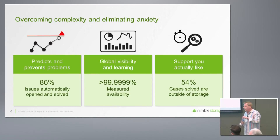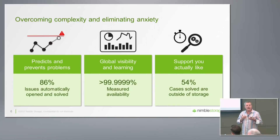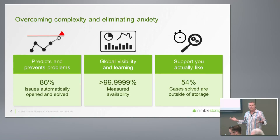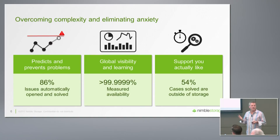Let me walk through the value we give back to our customers. We have the ability to predict and prevent — we actually open and resolve with prescriptive recommendations 86% of issues in the support organization. We have global visibility across the entire install base and are able to learn from one customer and apply that learning to all customers. Our fundamental tenant within InfoSight is: if we've seen an issue once — whether in a support lab, QA lab, or at a customer site — it's our goal to not let that happen to anybody else in the world. That's a huge factor in driving our six nines availability.